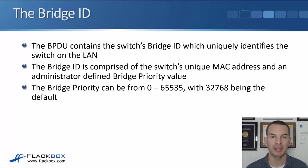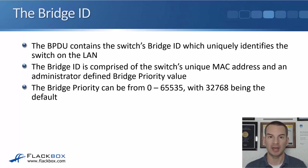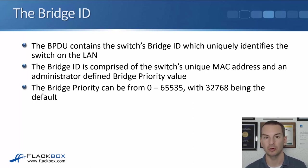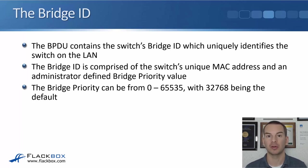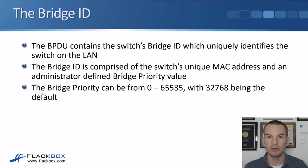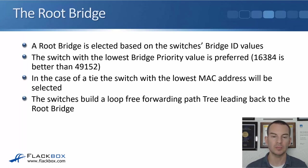The BPDU contains the switch's bridge ID, which uniquely identifies the switch on the LAN. The bridge ID is comprised of the switch's unique MAC address and also an administrator-defined bridge priority value. The bridge priority can range from 0 to 65535, and 32768 is the default. Switches always have a MAC address out of the box; the bridge priority can be set by the administrator, but if not set it defaults to 32768.